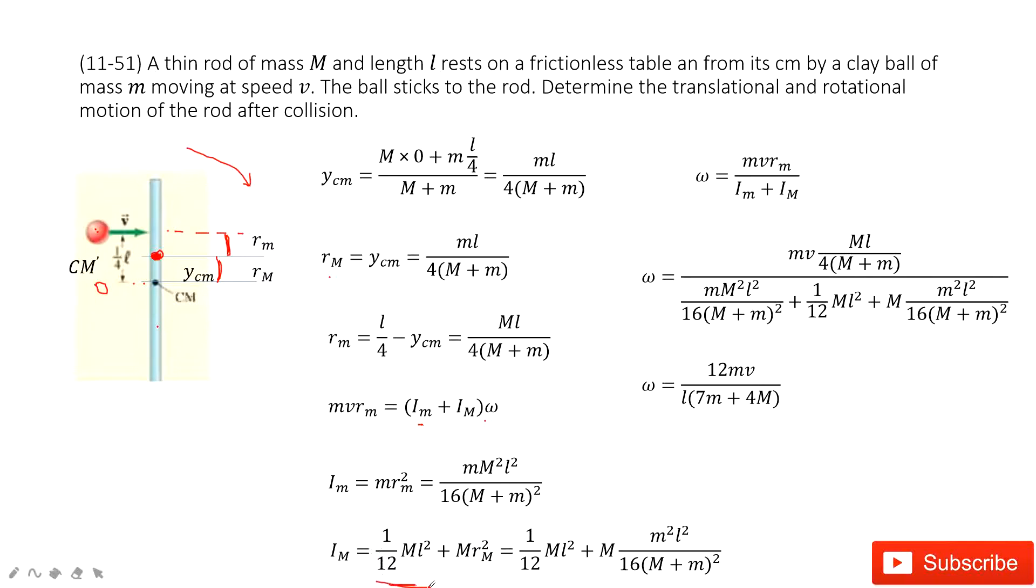So this part is the moment of inertia for the center of mass for the stick. Then to use the parallel axis rule, it moves this length, so it becomes M r_M squared.